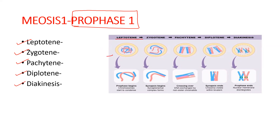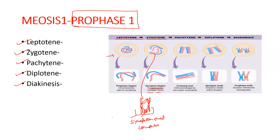Prophase one takes place in five steps: leptotene, zygotene, pachytene, diplotene, and diakinesis. In leptotene, condensation of chromosomes begins. In zygotene, a synaptonemal complex forms between the non-sister chromatids of homologous chromosomes. These chromosomes together are called a bivalent or tetrad — tetrad because four arms are present.